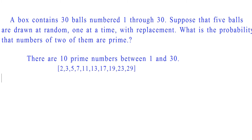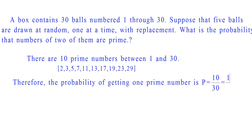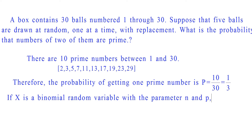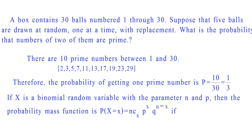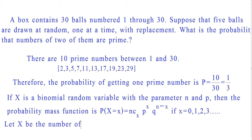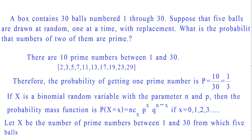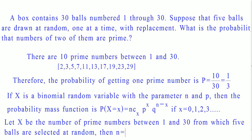Therefore, the probability of getting 1 prime number is equal to 10 by 30, which is equal to 1 by 3. If x is a binomial random variable with parameters n and p, then the probability mass function is nCx · p^x · q^(n−x). Let x be the number of prime numbers obtained from 5 balls selected at random. Then n is equal to 5 and p is equal to 1 by 3.